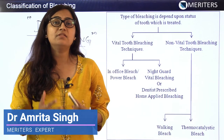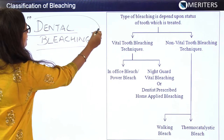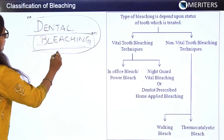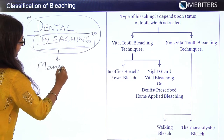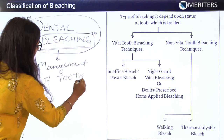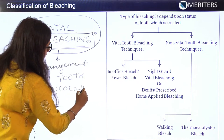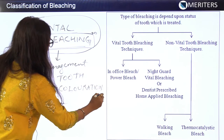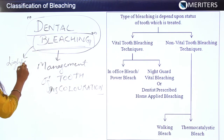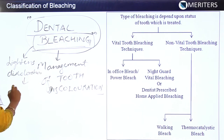After understanding tooth discoloration and classifying dental stains, the next term is dental bleaching. Bleaching is the term used for management of tooth discoloration, and a bleaching agent basically lightens the discoloration to as close as the natural color of the tooth.